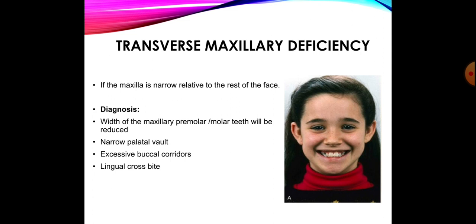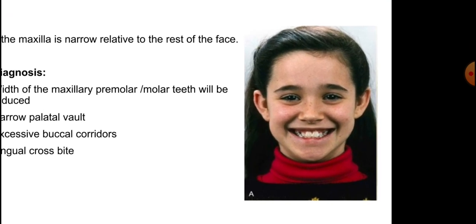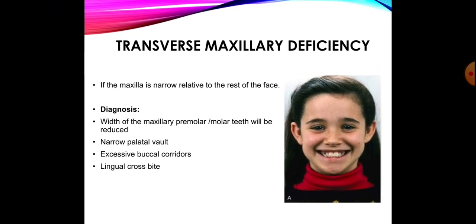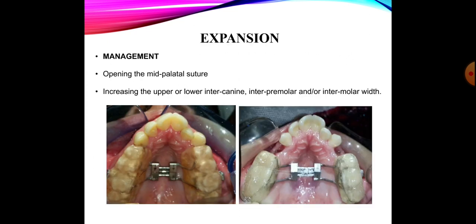On dental cast we may see the narrowing of the width of the premolars and molar teeth, and narrowing of the palatal vault. On smile analysis, as we can see in this patient, there will be excessive dark buccal corridors. On clinical and intraoral examination we may see lingual cross bites. All these signs signify that there is transverse maxillary deficiency in this patient.